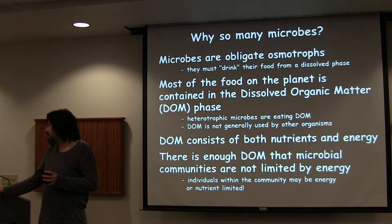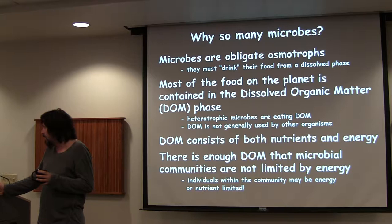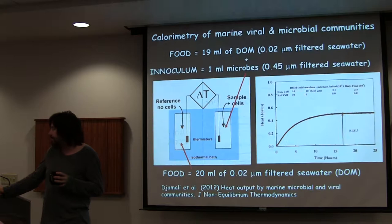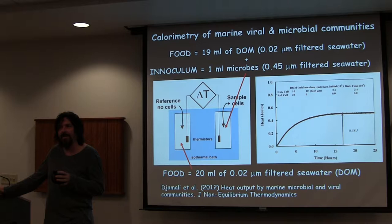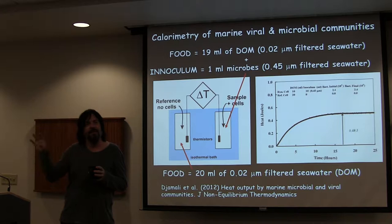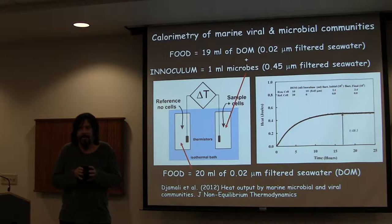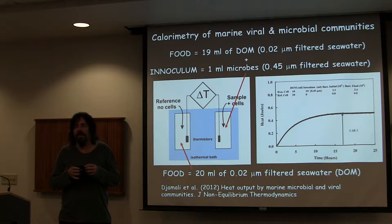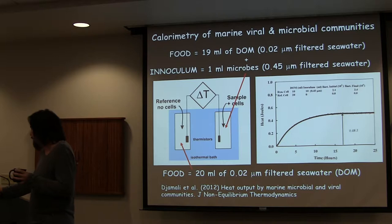Do you guys have any questions? So we went through basically why there are so many microbes and why there are so many viruses in the marine environment and actually all environments. Then we went through the calorimetry stuff — you guys have seen this twice now so you should have it. You guys remember these ideas of how you set up experiments where you mix viruses with just the bacteria or with just DOM and see top-down predation. Those are based on Wilcox and Furman — you've got to know that paper, it's a really important one.